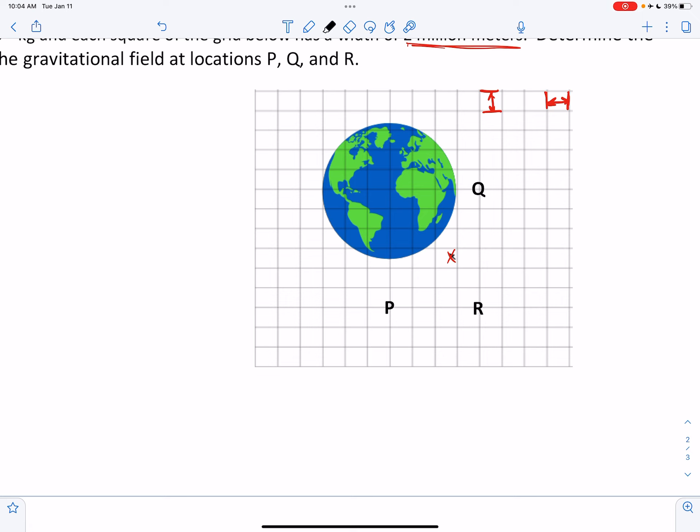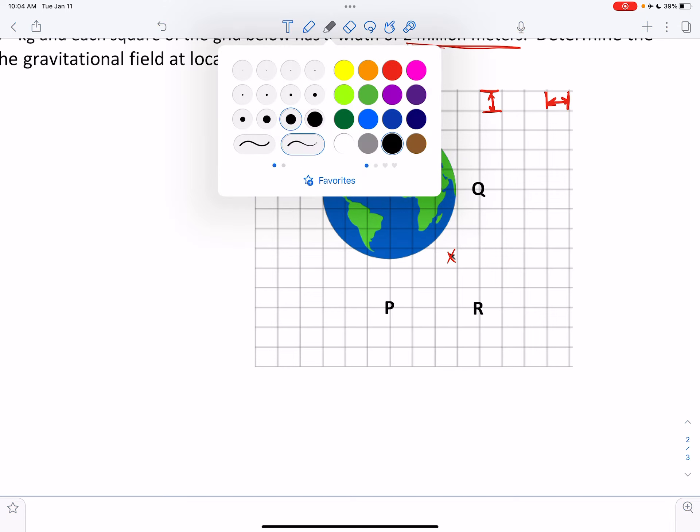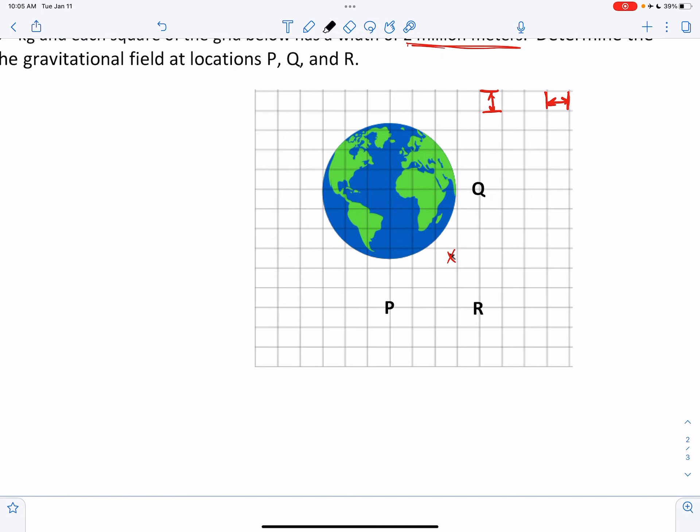At location P, let's say that an astronaut was in space out there. The astronaut would experience a pull this way. And at R, an astronaut would experience a pull this way, towards the center of the Earth. And at Q, an astronaut would experience a pull this way.